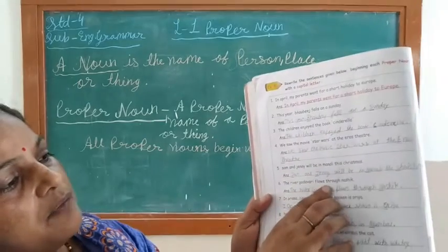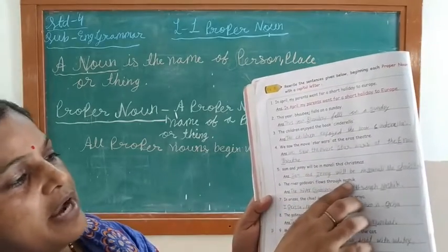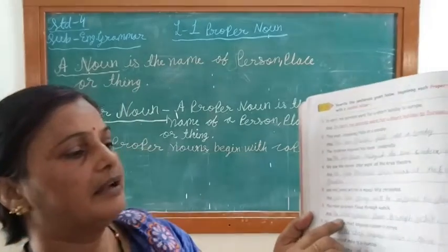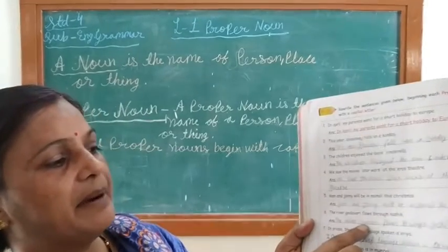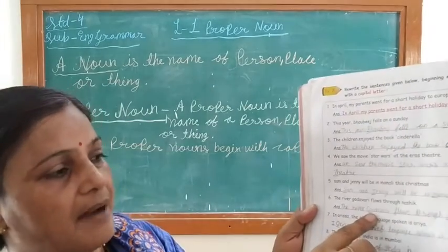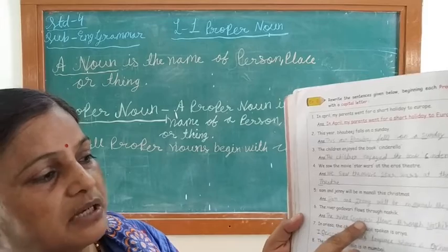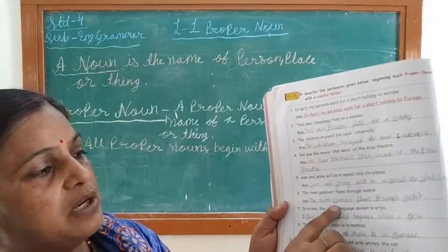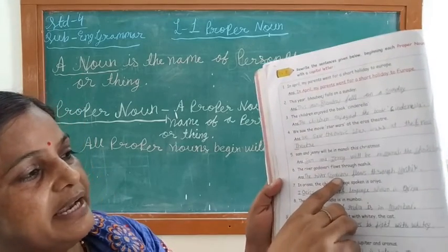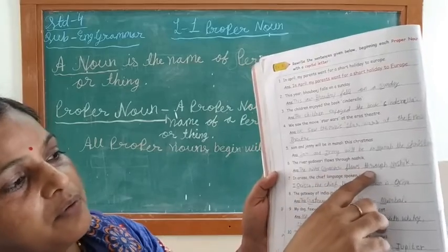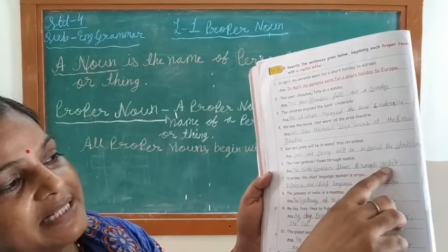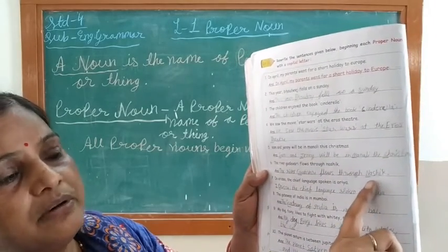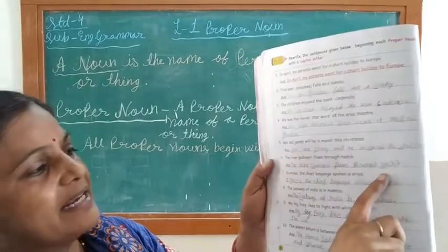The river Godavari flows through Nase. 'Godavari' is the proper name — G-O-D-A-V-A-R-I — so G is capital. 'Nase' is the name of a city, so N is capital.